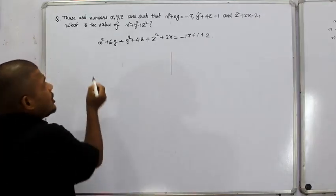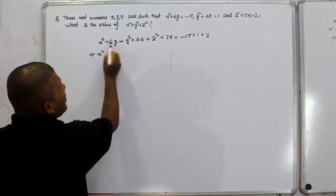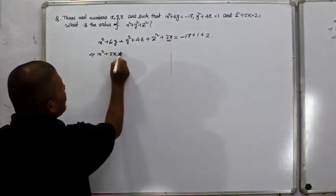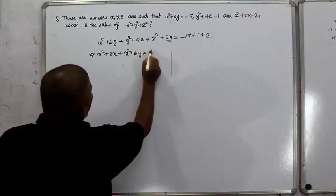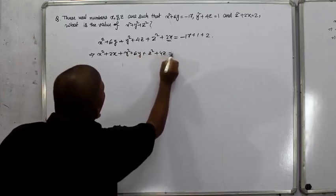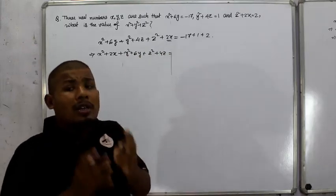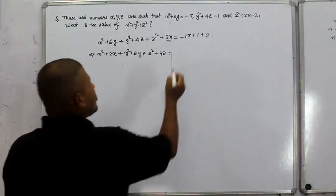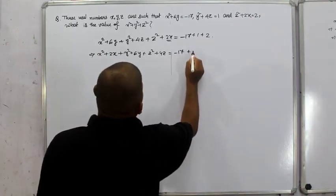Now x squared is related to 2x, y squared is related to 6y, and z squared is related to 4z. We arrange these terms. The right side gives us minus 17 plus 1 plus 2, which equals minus 14.